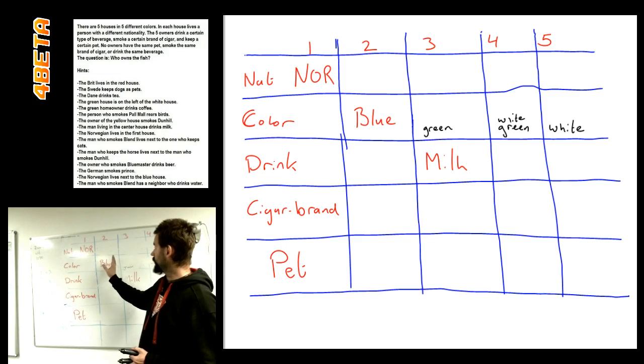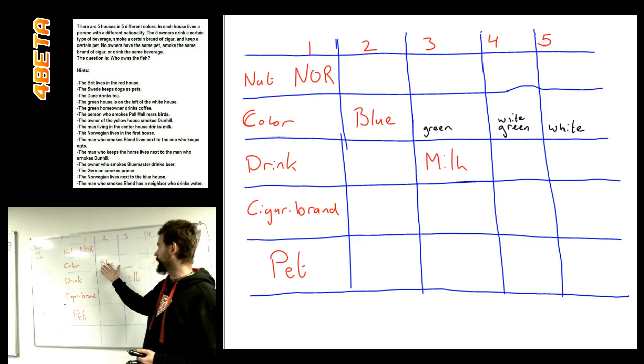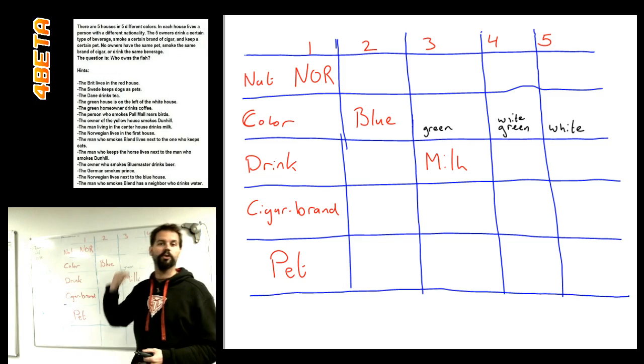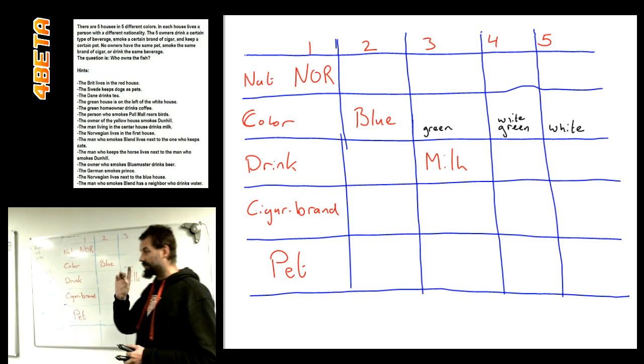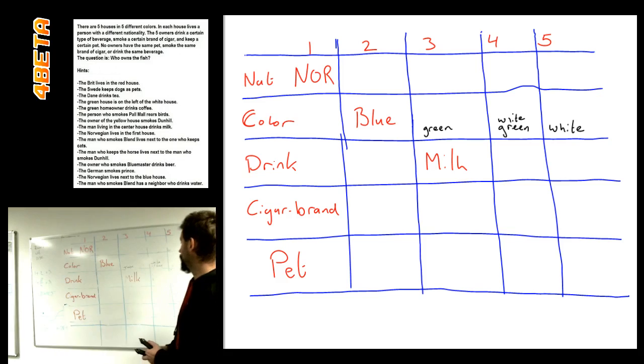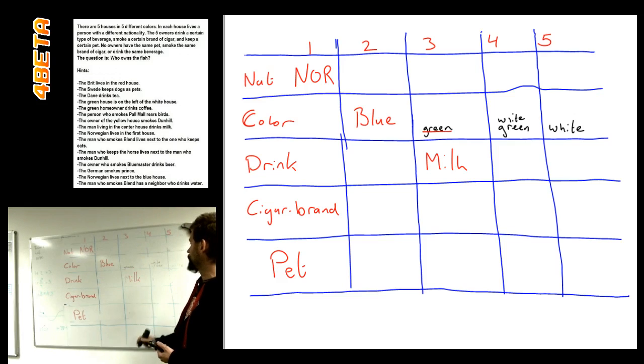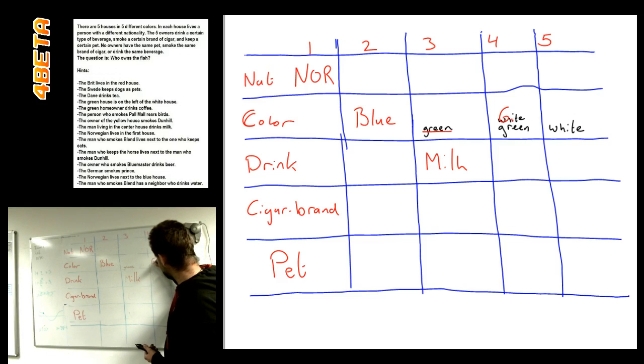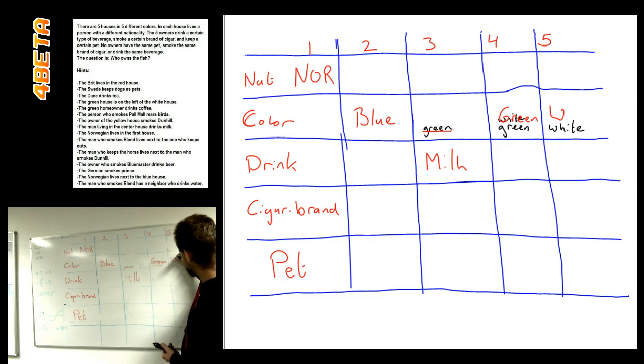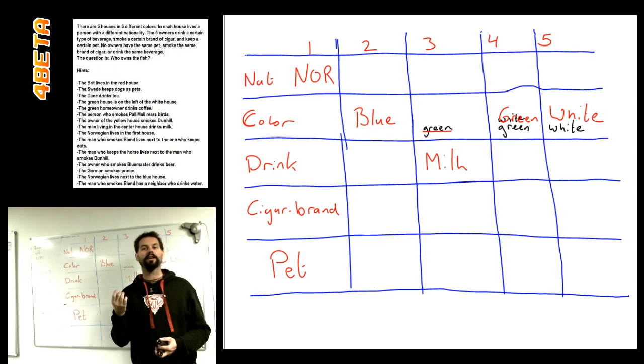Because in the other two options, the other two slots, there's no possibility to put either the white or the green house, because we already have the blue one. But we also have the rule that the guy in the green house drinks coffee. And, well, in house number three, the guy drinks milk. So we know that this cannot be true. Leaving only this one. Leaving only this option.